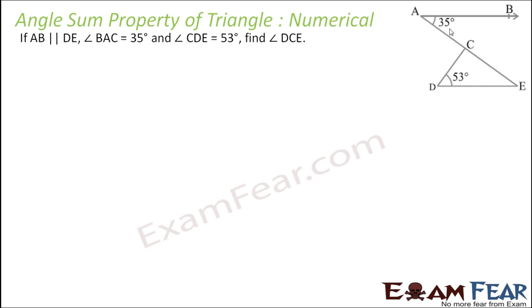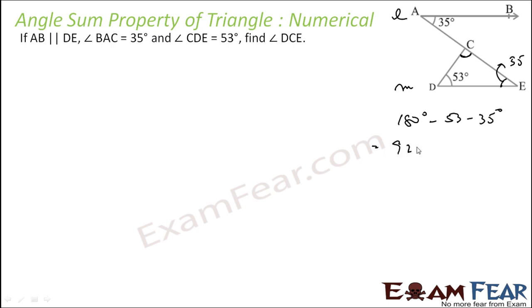Given that AB is parallel to DE, angle BAC is 35 degrees, and angle CDE is 53 degrees. We have to find angle DCE. Since L is parallel to M, this angle of 35 degrees gives us an alternate angle of 35 degrees. So the answer is 180 minus 53 minus 35, which equals 92 degrees. Once we know two angles in the triangle, we find the third using the angle sum property of 180 degrees.